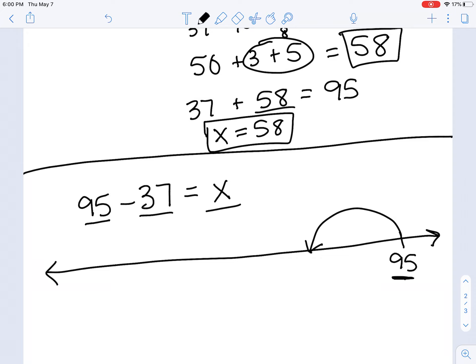So 95 take away 37. So first I'm going to take away 30 because that should be easy to do—that's just like three jumps of 10. So 95, 85, 75, 65. So 95 minus 30 is 65.